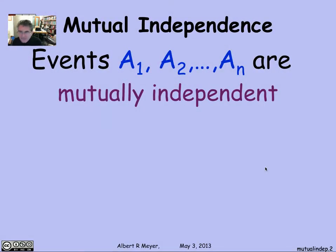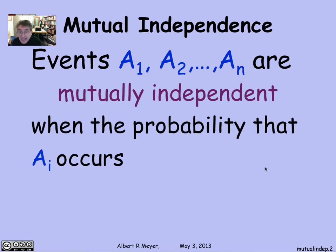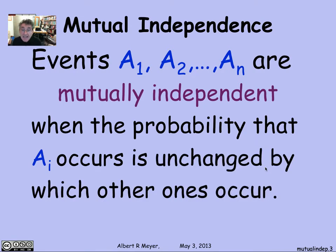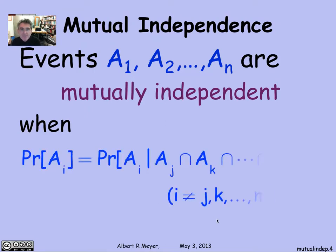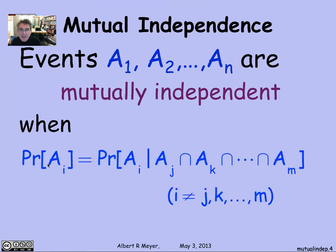If I have n different events, I'll say that they're mutually independent, intuitively, if the probability that one of them occurs is unchanged by which other ones happen to have occurred. Expressed in conditional probability — the way to make it precise — events A1 through An are mutually independent when the probability of Ai is equal to the probability of Ai given the intersection of any of the other A's, as long as i is not one of them.